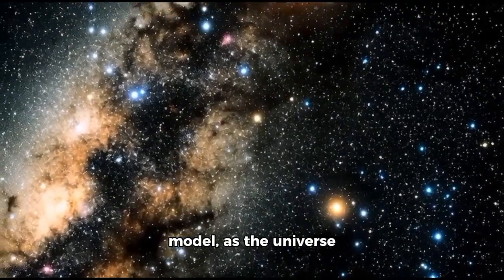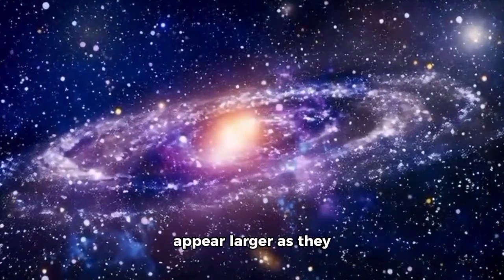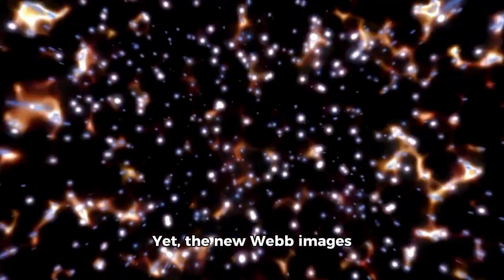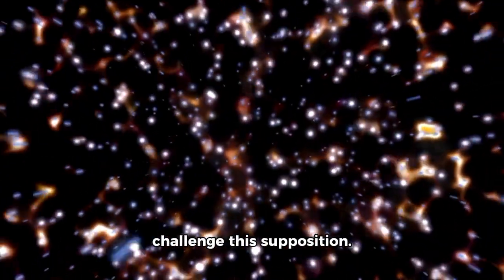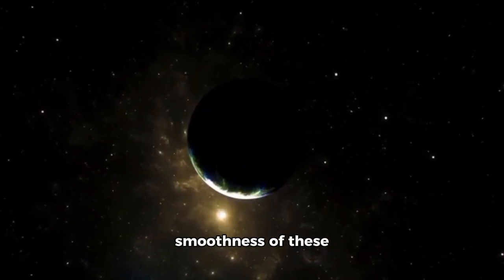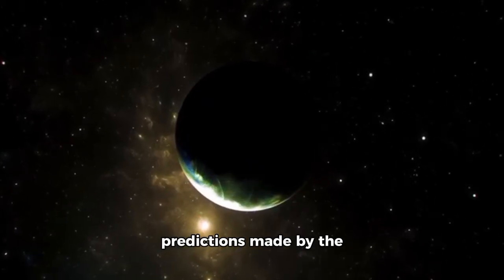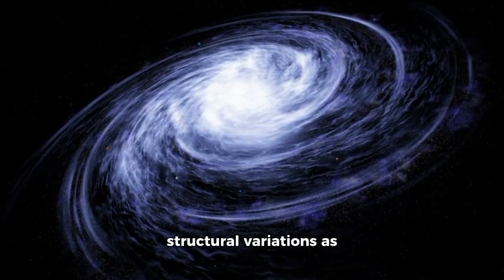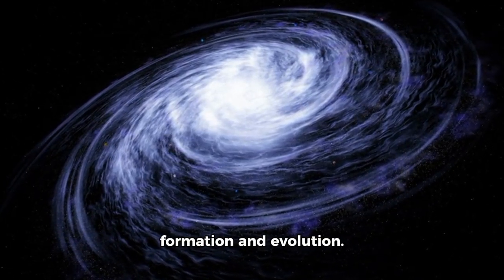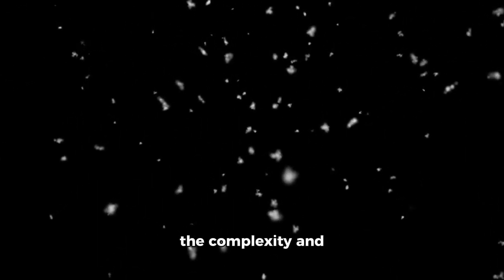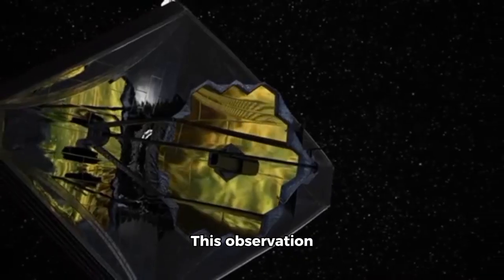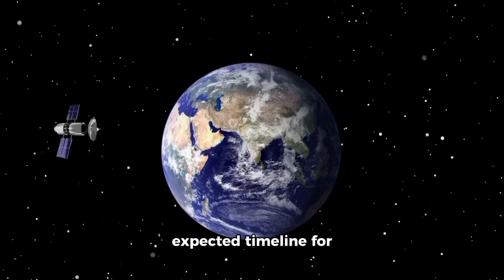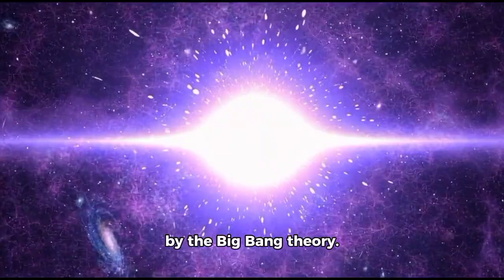According to the Big Bang model, as the universe expands, galaxies should appear larger as they move farther away. Yet, the new Webb images show galaxies that challenge this supposition. Additionally, the smoothness of these galaxies contrasts with predictions made by the Big Bang Theory. According to this model, galaxies should exhibit irregularities and structural variations as a result of their formation and evolution. However, the Webb images reveal galaxies that are unusually smooth and lack the complexity and roughness one would typically anticipate finding in galaxies of this age.